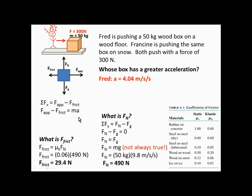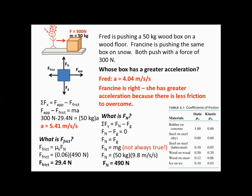Plugging into the x-direction equation, applied force minus friction equals mass times acceleration. Solved for acceleration, Francine's acceleration is 5.41 meters per second squared. So whose box has a greater acceleration? Francine's. She was right — she has a greater acceleration because she has less friction to overcome. Fred would have been right if it was a frictionless surface, but because there was friction to consider, Francine was correct.